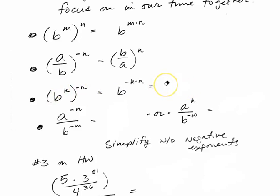b to the negative kn. And to get rid, if you will, to remove the negative, I'm going to then write it in the denominator. So 1 over b to the kn.